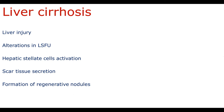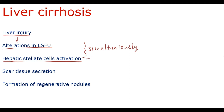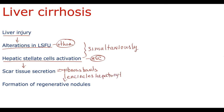We can define several major events in cirrhosis pathogenesis. First of all, it's liver injury that leads to alterations in liver sinusoid functional unit and hepatic stellate cells activation. These two events basically occur simultaneously, but for simplicity we can divide the processes that occur with hepatic stellate cells, because they are the key cells in fibrogenesis, and processes that occur with other cells of liver sinusoid functional unit. Activated hepatic stellate cells start to excessively secrete scar tissue to save hepatocytes from inflammation, forming fibrous bands that encircle hepatocytes with formation of regenerative nodules.